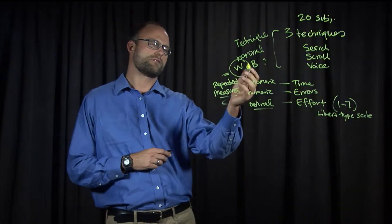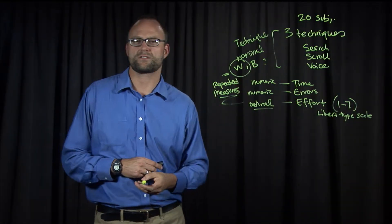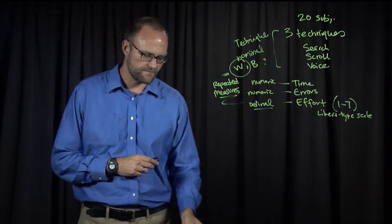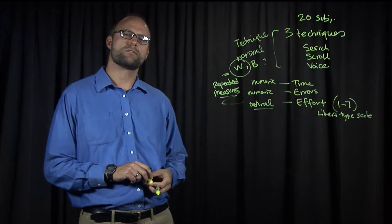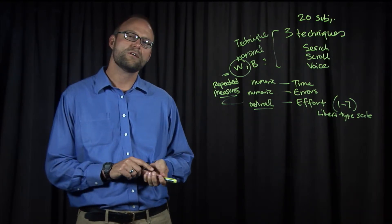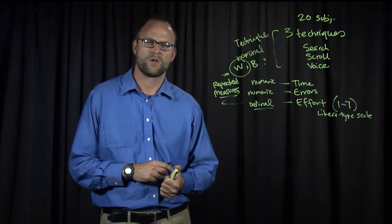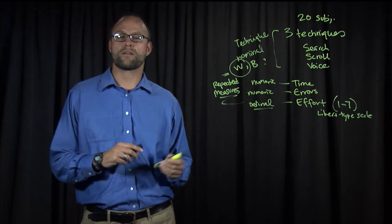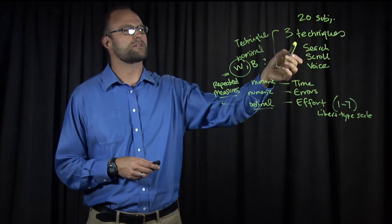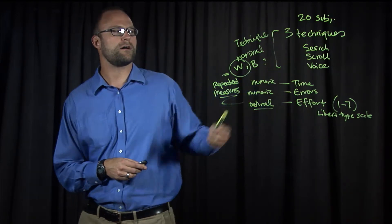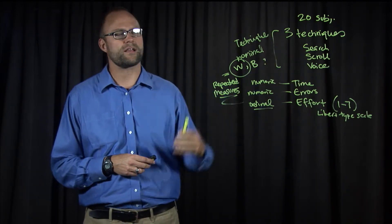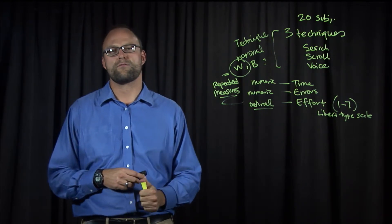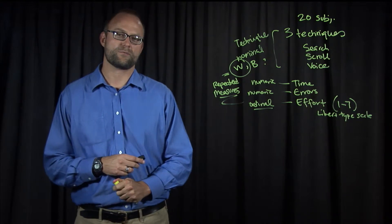Now let's ask ourselves, when should we use within subjects variables versus between subjects variables? What would be the considerations there? Well, the short answer is, you should use a within subjects variable whenever you can. Why is that? Well, for one thing, it takes many fewer subjects to get the same amount of data. We would need 60 subjects if each subject only did one of the techniques, but we need 20 if they each do all three. So we have more data from fewer subjects we have to recruit.